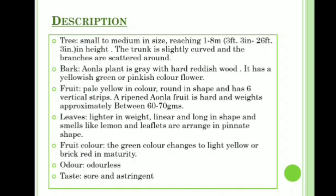The flowers are yellowish green or pink in color. The fruit is pale yellow in color, round in shape, and has six vertical strips. A ripened Amla fruit is hard and weighs approximately 60 to 70 grams. The leaves are light in weight, linear and long in shape, smell like lemon, and leaflets are arranged in a pinnate shape. Fruit color changes from green to light yellow or brick red at maturity. Odor is odorless; taste is sour and astringent.